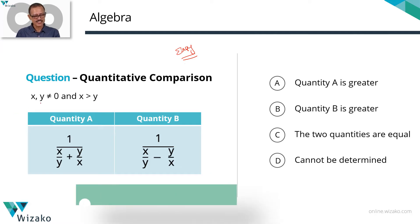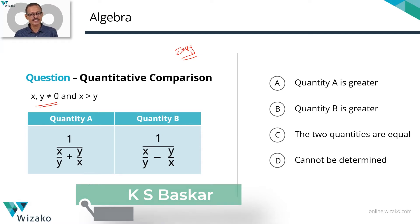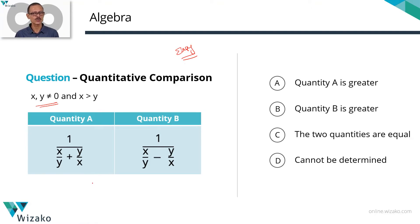The problem states that x and y are not equal to 0, and x is greater than y. Can x and y both be positive? Yes. Can x and y both be negative? Yes. Can one be positive and one be negative? Yes. All of these possibilities exist — it's just that neither x nor y is 0.